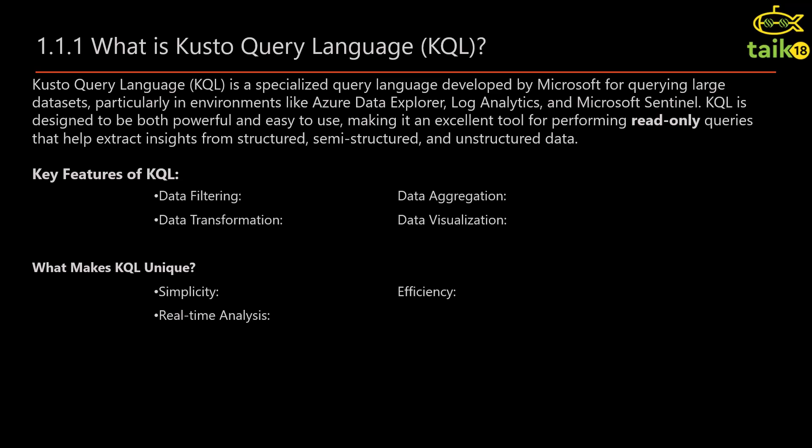You can also do data transformations. KQL supports various transformation functions to manipulate data types, apply conditional logic and reshape results for better analysis. And it also has some beautiful data visualizations — you can render query results into visual formats like tables, charts, bar graphs, trend charts and pie charts, allowing for easy interpretation of the data.